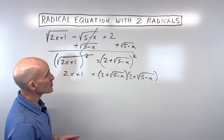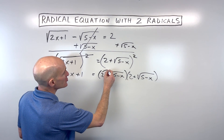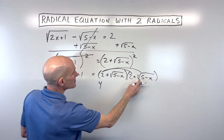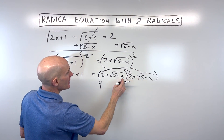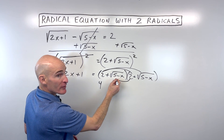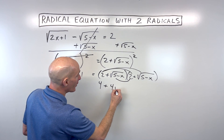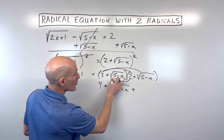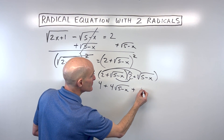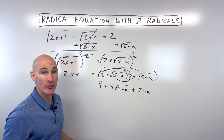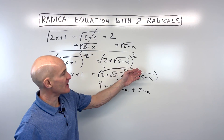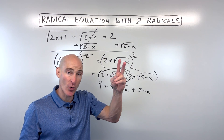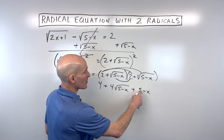You'll be missing one of the terms if you do that. So we distribute: 2 times 2 is 4, then 2 times square root of 5 minus x, plus square root of 5 minus x times 2, giving 4 times square root of 5 minus x. Then the square root times itself just gives you 5 minus x, because the square and square root cancel.